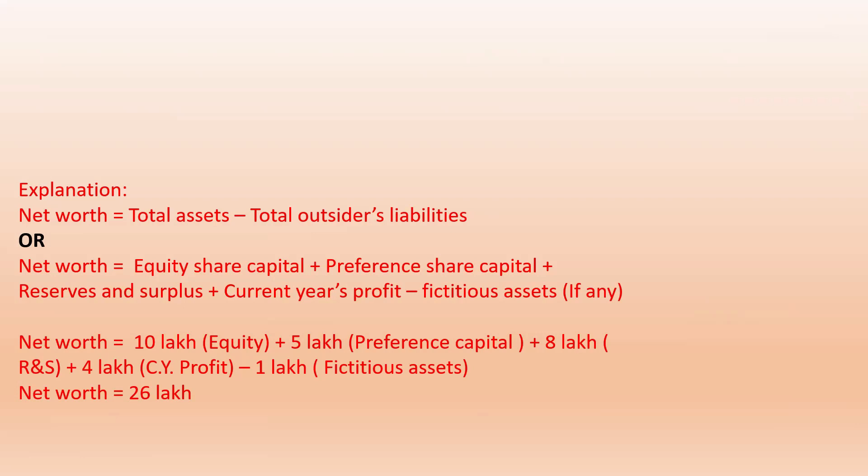We have two formulas for net worth. Formula 1: Net worth = Total assets minus total outsiders' liability. On the balance sheet assets side, we have fixed assets, long-term investments, and current assets. One more item is fictitious assets — they look like assets but they are not actual assets, also called fake assets. Examples include preliminary expenditures, underwriter's commission, heavy advertisement expenditure, and profit & loss account debit balance in a loss year.